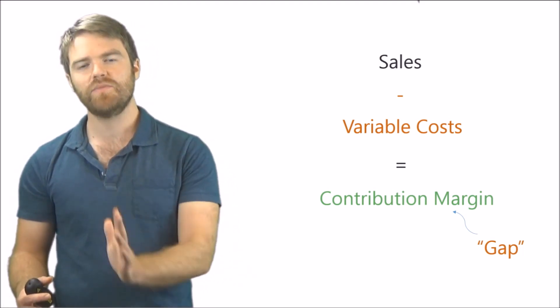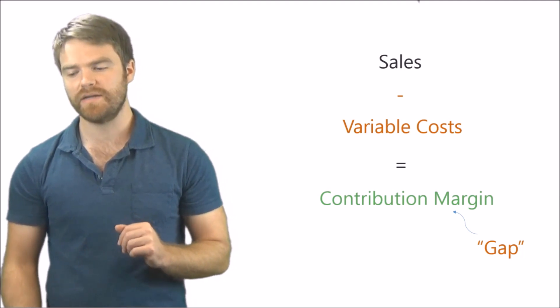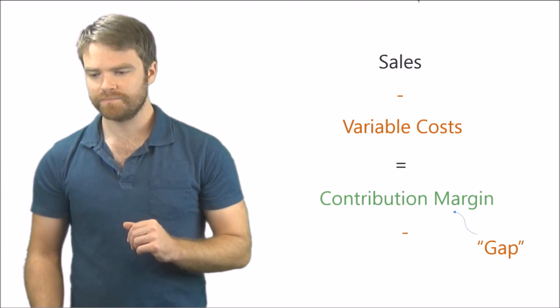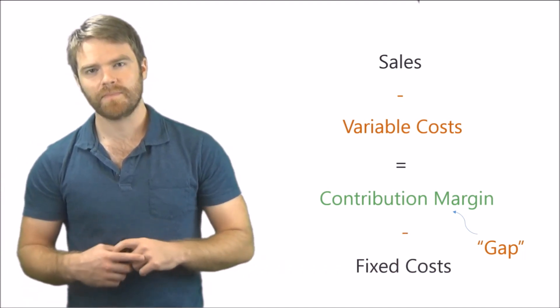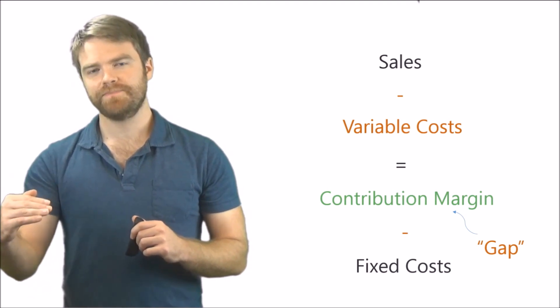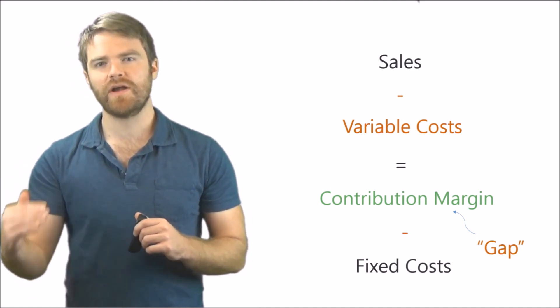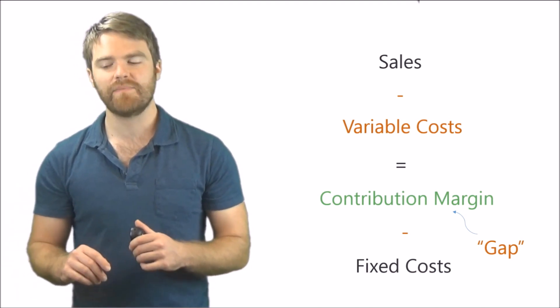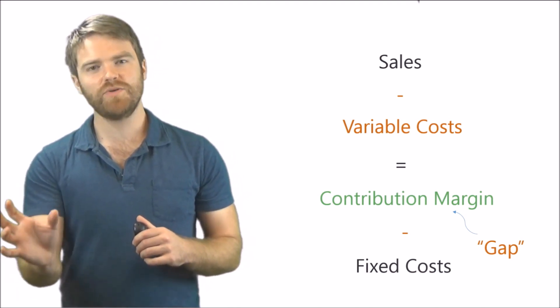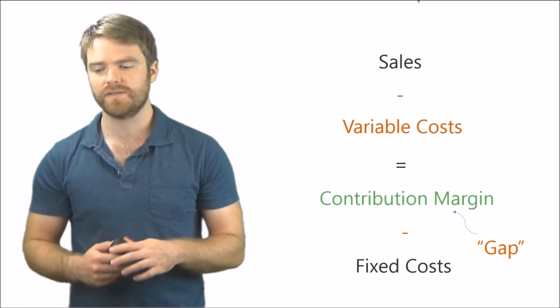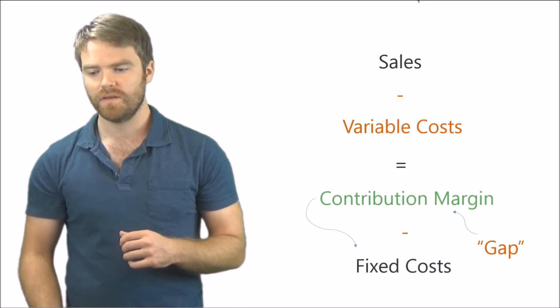The gap between your sales minus variable costs and your fixed costs. It's the gap, it's the in-between, and you'll see that here. Notice this: the margin is in between your sales and variable costs and your fixed costs. That's why I call it the gap. You can see here contribution margin is contributing to paying off your fixed costs. That's what it does.